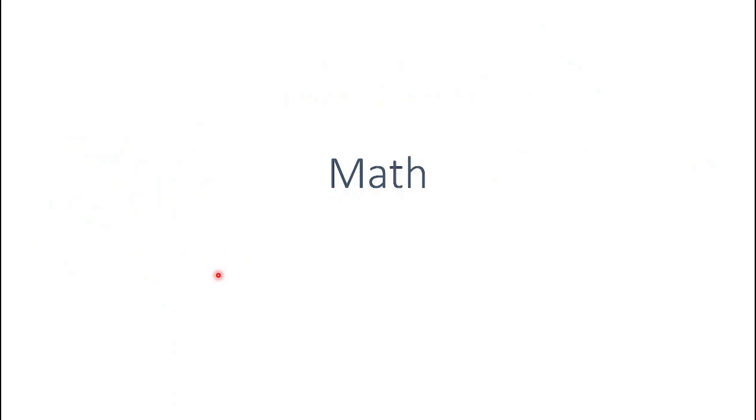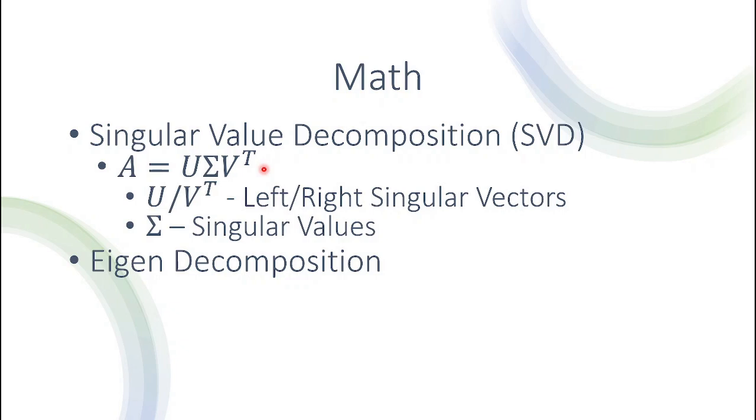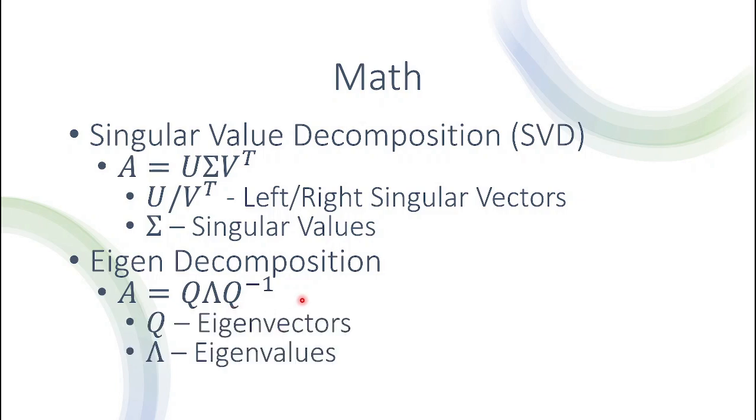Let's move on and talk about the mathematical aspects and the notations for these methods. We have singular value decomposition and eigen decomposition. For singular value decomposition, the three matrices are U, sigma, and V transpose. U and V transpose are the left and right singular vectors and sigma are the singular values. For eigen decomposition, we have Q, large lambda, and Q inverse. Q are the eigenvectors and lambda are the eigenvalues. These are simply the names of the different components.